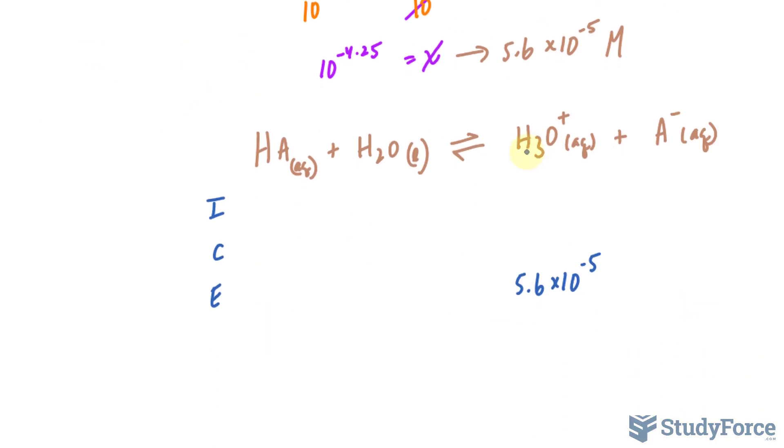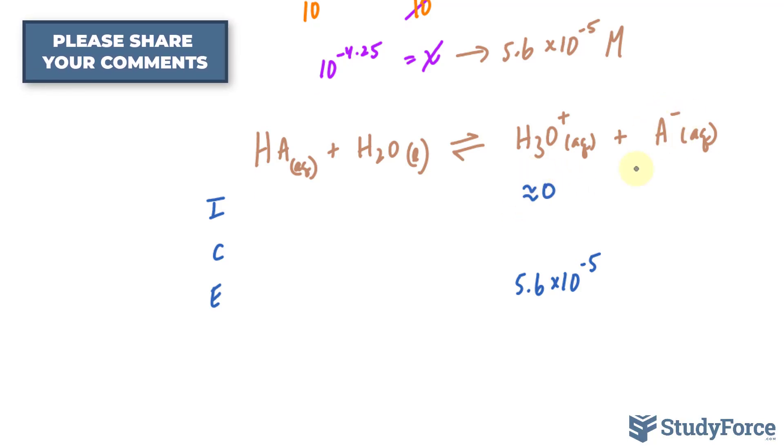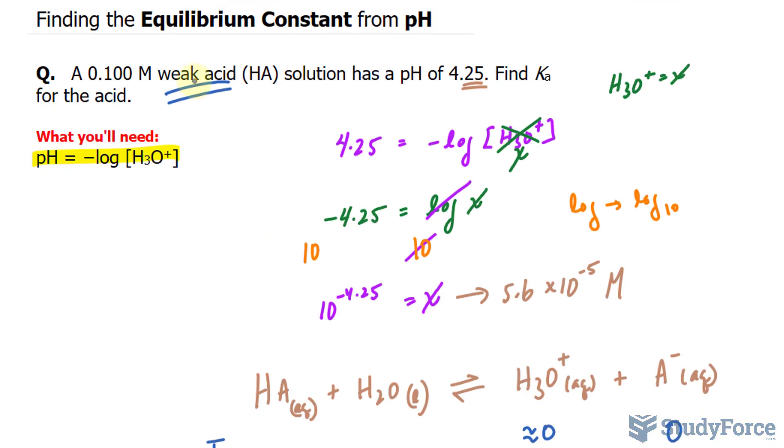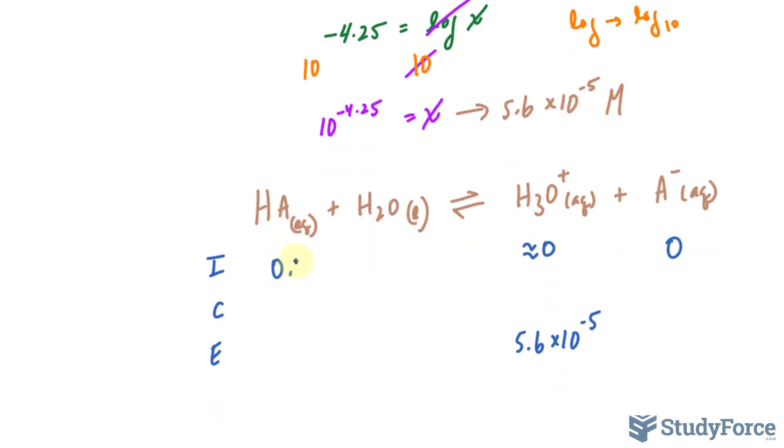The concentration of H3O+ initially is really small, so approximately zero. And the concentration of the conjugate base is zero. Furthermore, we know the weak acid has an initial concentration of 0.100, so I'll place that right here. And since H2O is a liquid, you may completely ignore it.